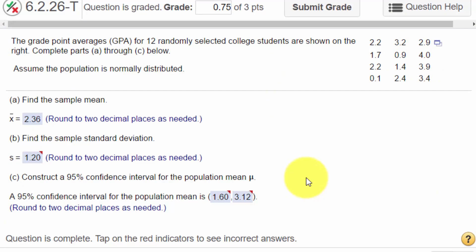Okay, this last problem I want to show you. We're given a data table here, and it says the grade point averages for 12 randomly selected college students are shown. Complete the parts below, assume the population is normally distributed, and find the sample mean, the sample standard deviation, construct a 95% confidence interval for the population mean. Okay, well, how do we solve this? Two clues there. One, we only have 12 items, 12 students in our sample.